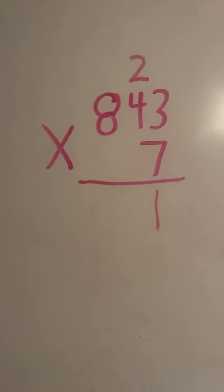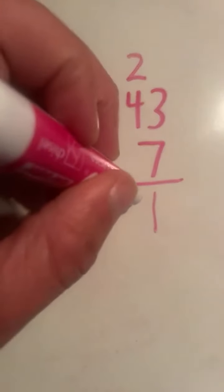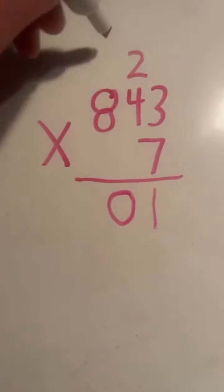4 times 7 equals 28, plus 2 equals 30. Again, we're regrouping. The 0 in 30 goes in the tens place.